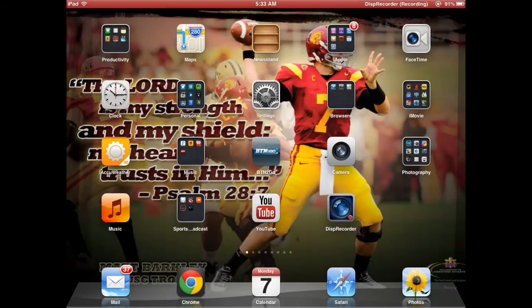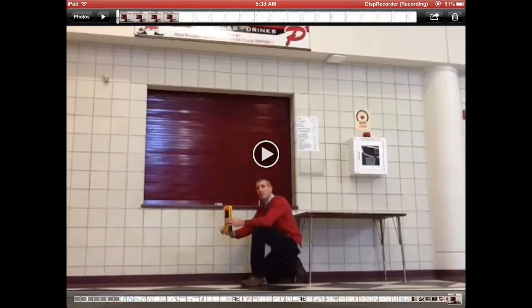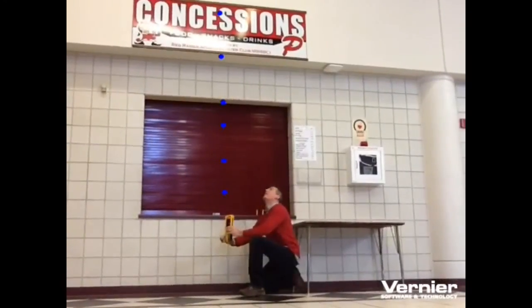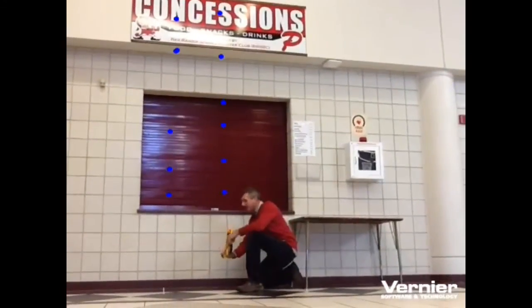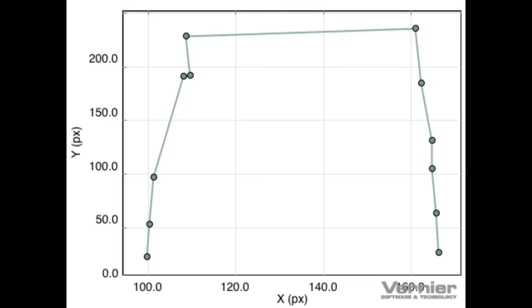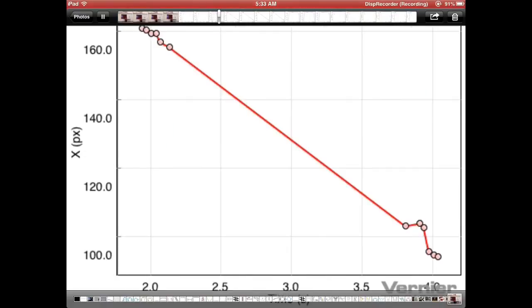Once successfully saved to the camera roll, you'll be able to go to your photos and find the actual video. You'll be able to see the blue dots go up and come down, and then you'll be able to see your graph that you will have to place on your paper.